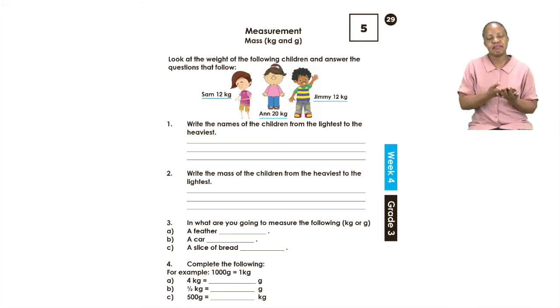So when we are measuring there are two units of measurement that we use. We either say kilograms which is represented by kg or grams which is represented by g. The first thing you need to know boys and girls is that grams are more. When there are many, many, many grams it turns into kilograms. So the heavier one is kilograms and the lighter one is grams.